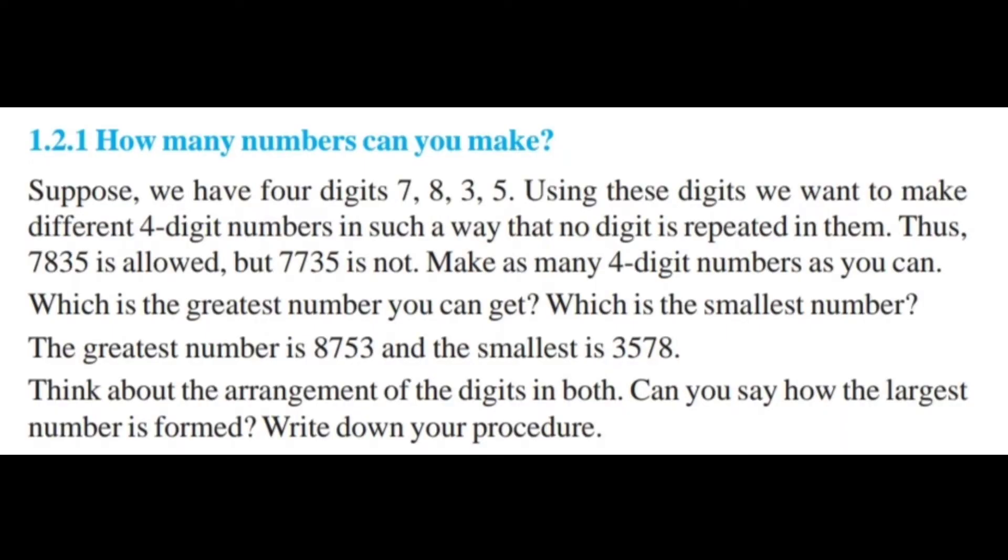Next one: How many numbers can you make? Suppose we have 4 digits: 7, 8, 3, 5. Using these digits, we want to make different 4-digit numbers in such a way that no digit is repeated in them. Thus 7835 is allowed but 7735 is not. Make as many 4-digit numbers as you can. The greatest number is 8753 and the smallest is 3578. Think about the arrangement of the digits in both. Can you say how the largest number is formed? Write down your procedure.